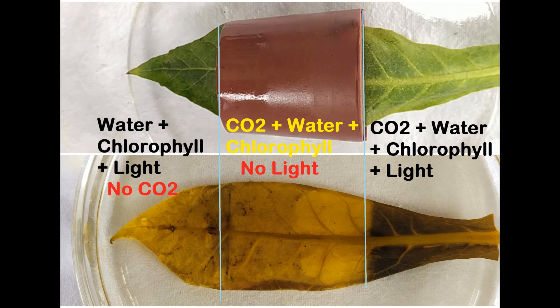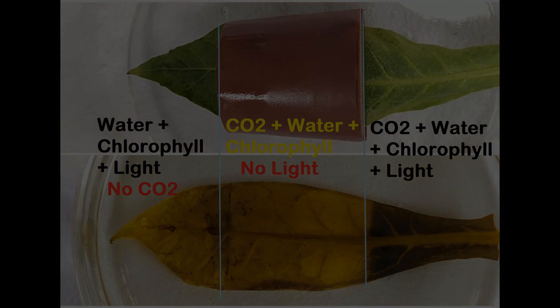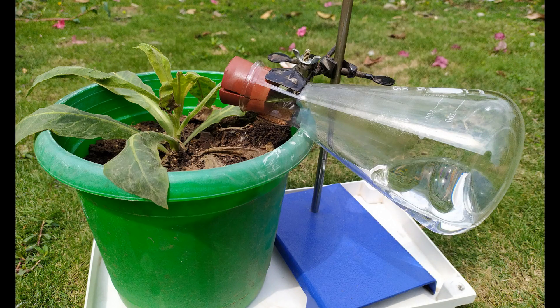And finally, the portion of the leaf inside the flask contains chlorophyll, receives water from the plant, and light from the sun. However, since the hydroxide solution in the flask has absorbed all the carbon dioxide contained inside the flask, this portion of the leaf cannot carry out photosynthesis in the absence of carbon dioxide. Hence, it tests negative for starch. This simple yet elegant experiment clearly demonstrates that carbon dioxide, light, water, and chlorophyll as a whole are essential for photosynthesis to take place in a plant.